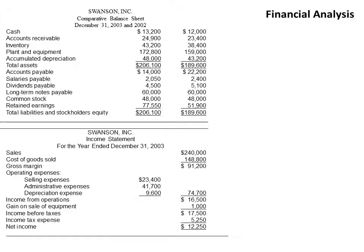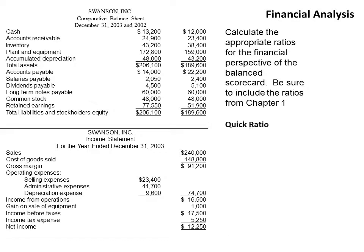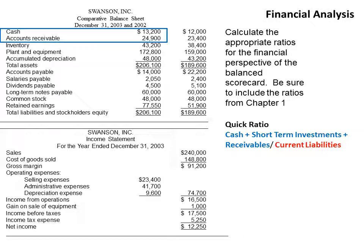The first one we want to take a look at is the quick ratio. The quick ratio is cash plus short-term investments plus receivables divided by current liabilities. As you can see highlighted in blue, I've highlighted the cash and accounts receivable from the current year — the left column is the current year. Those are our current liabilities. Notice we're not incorporating inventory; inventory is not included in the quick ratio.